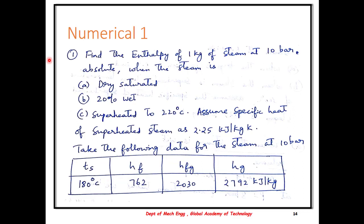Now let us look at numerical sample 1. The question reads: find the enthalpy of 1 kg of steam at 10 bar absolute when the steam is dry saturated, 20% wet, and superheated to 220 degrees Celsius. Assume the specific heat of superheated steam as 2.25 kJ per kg Kelvin and take the following data from the steam tables at 10 bar.